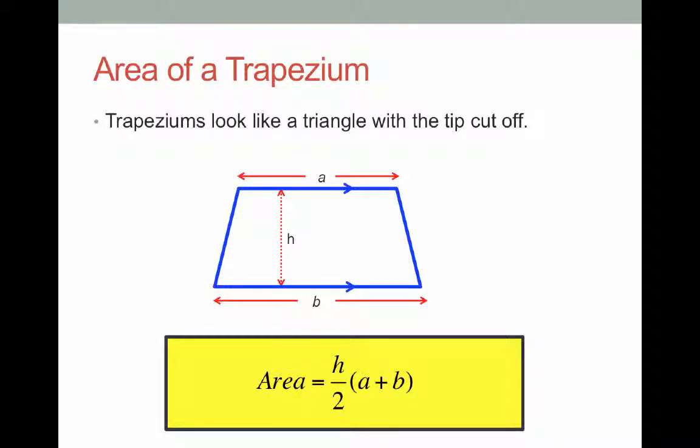The area is the height divided by 2, or half the height, times the sum of A plus B. So we need to add A and B together. Let's take a look at how that would be in an example.